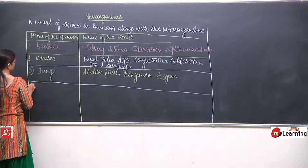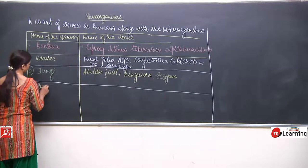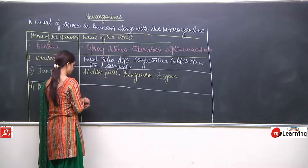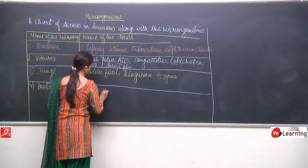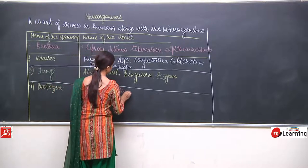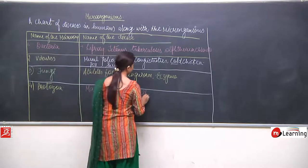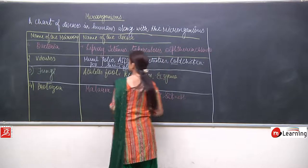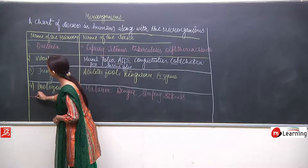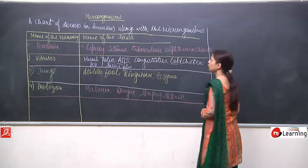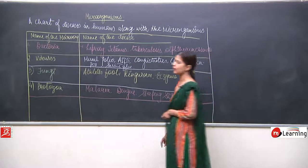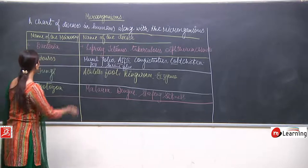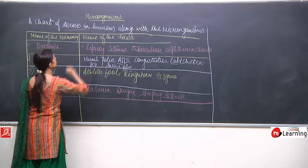If I talk about protozoans, we were just discussing about malaria, dengue, and sleeping sickness — all these diseases are due to protozoans. So even if you just read the chart once or twice you will be able to write properly which disease is caused by which microorganism, as I am discussing about the diseases in human beings.